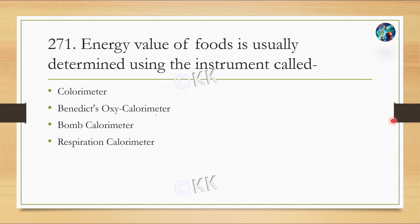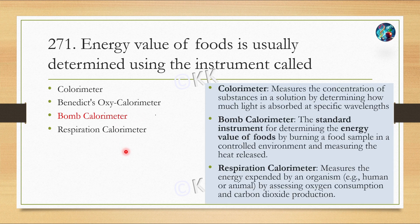Energy value of food is usually determined by using the instrument called: option A, Calorimeter; option B, Benedict's Oxycalorimeter; option C, Bomb Calorimeter; option D, Respiration Calorimeter. The correct answer is option C — Bomb Calorimeter.